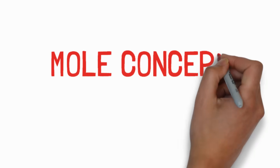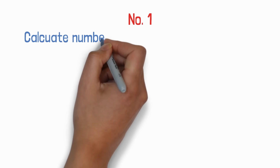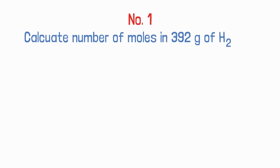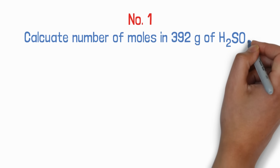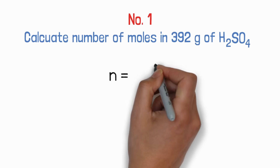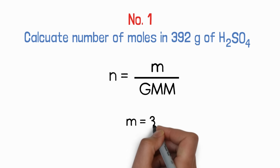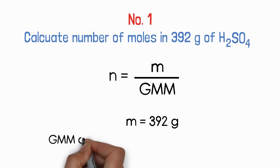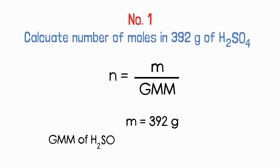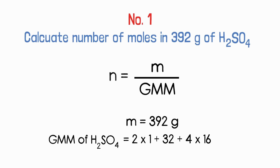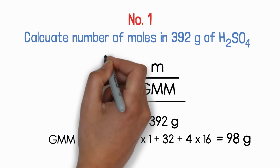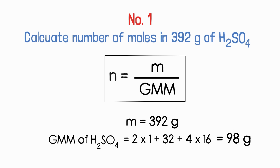Now let's learn how to use these formulas with numericals. First question: calculate the number of moles in 392 gram of H₂SO₄. We need to find number of moles for a molecular substance, so we use n = m / GMM. The given mass is 392 gram. Gram molecular mass of H₂SO₄ = (2 × 1) + 32 + (4 × 16) = 98 gram. Putting in the values, we calculate number of moles.